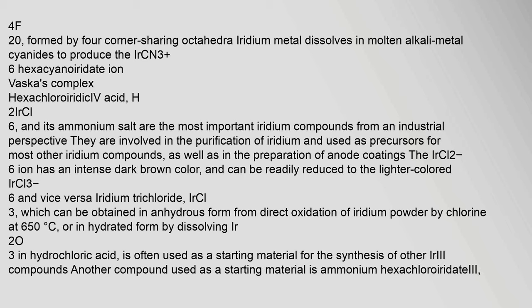Iridium metal dissolves in molten alkali metal cyanides to produce the [Ir(CN)6]^3- hexacyanoridate ion. Hexachloroiridic acid, H2IrCl6, and its ammonium salt are the most important iridium compounds from an industrial perspective; they are involved in the purification of iridium and used as precursors for most other iridium compounds, as well as in the preparation of anode coatings. The IrCl6^2- ion has an intense dark brown color, and can be readily reduced to the lighter colored IrCl6^3-. Iridium trichloride, IrCl3, can be obtained in anhydrous form from direct oxidation of iridium powder by chlorine at 650°C.